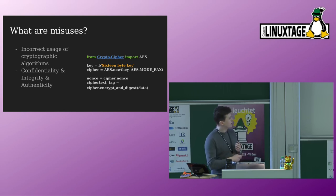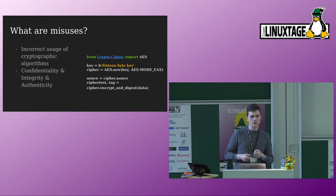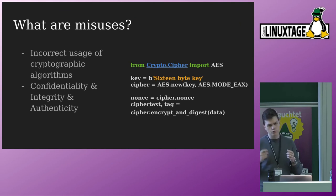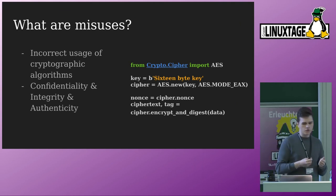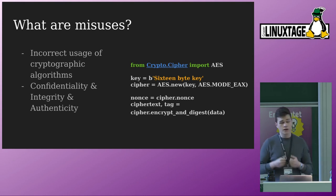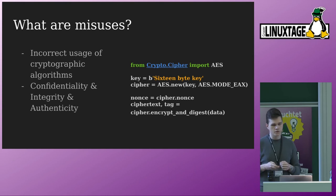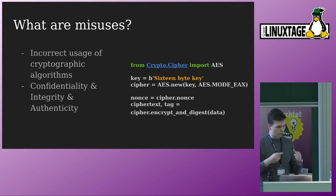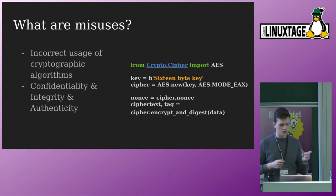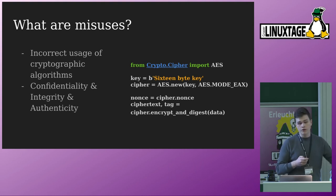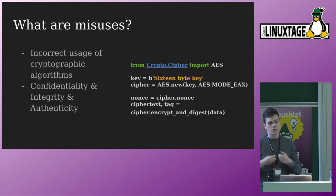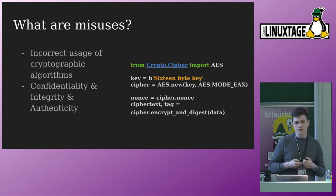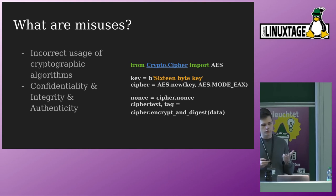If you haven't been exposed to a lot of cryptography, these terms might not mean a lot to you. Confidentiality means that if I encrypt a message, I want to be sure that nobody else can read it — only the person with the correct key can decrypt it. Integrity means that when I send a message, nobody should be able to alter it without the other person knowing. And authenticity means that when I receive a message, I want to be sure the sender is actually who they say they are.